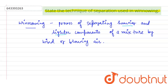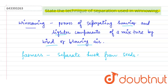The heavier and lighter components are separated by blowing wind or air. For example, farmers use this process of winnowing to separate the lighter husk — that is the covering of the seed grains — from the seeds. When the wind blows, the lighter particles like husk are blown away, and the heavier seed particles remain and are separated from the lighter particles.